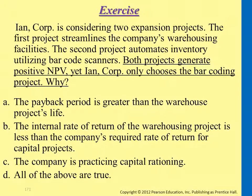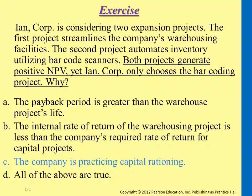The hint is that both projects have positive NPV, which means both have an IRR higher than the desired rate of return. So the company is exercising a capital rationing decision. This means the company has limited resources and must choose the investment project that is more urgent than the other — selecting the best use of constrained resources. We call this capital rationing.